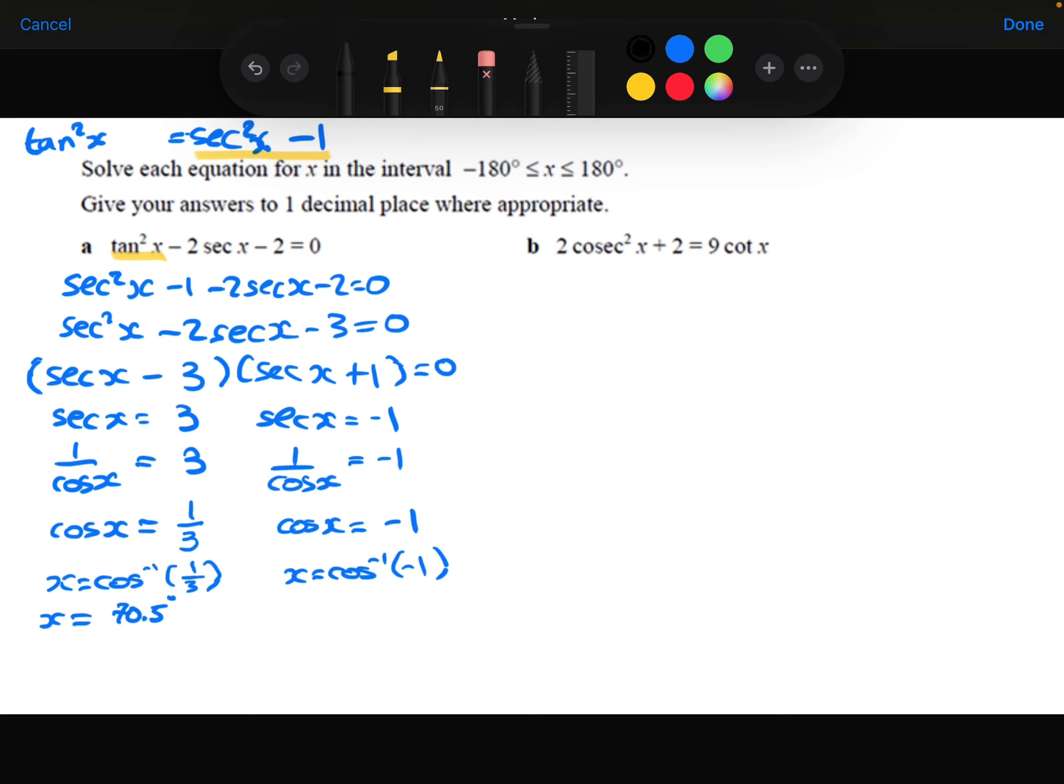Let's draw our graph between minus 180 and positive 180. So the cos graph looks like this. So that equals 1 third, roughly about there, in two places.